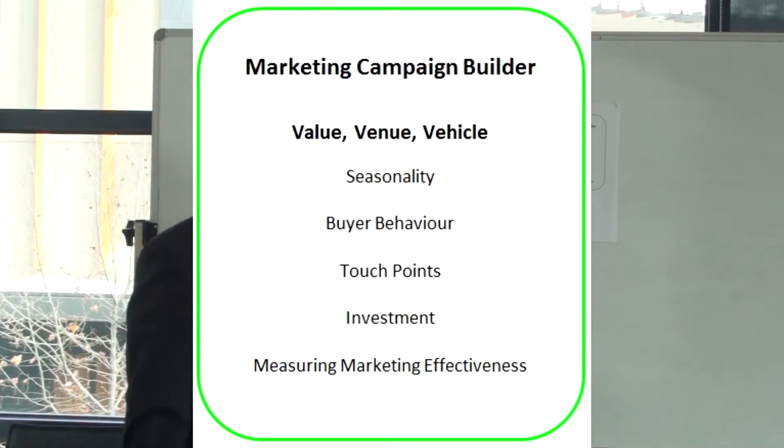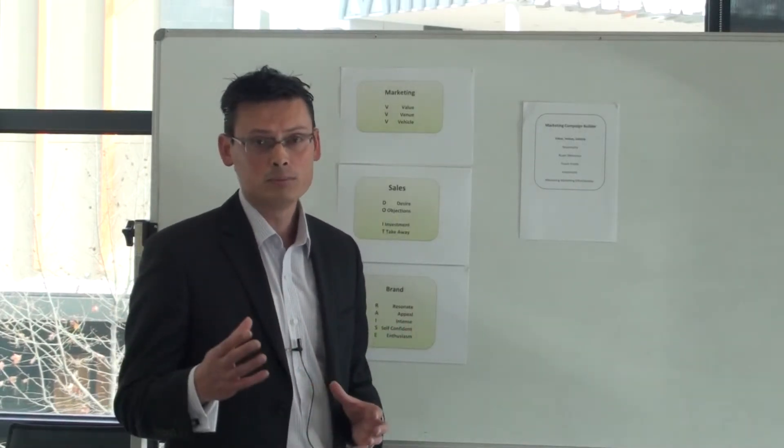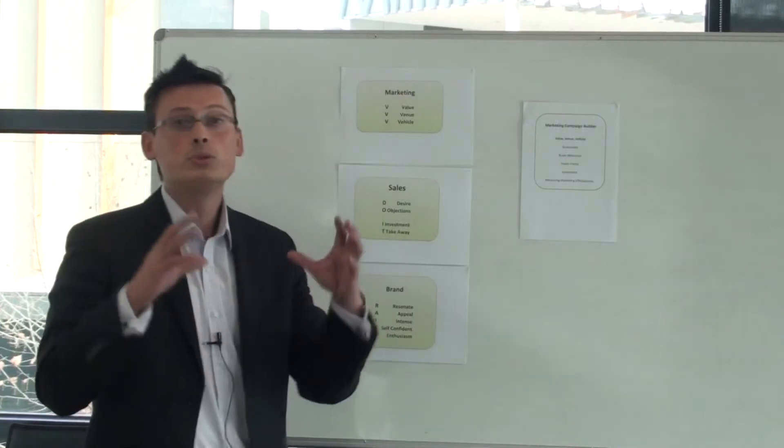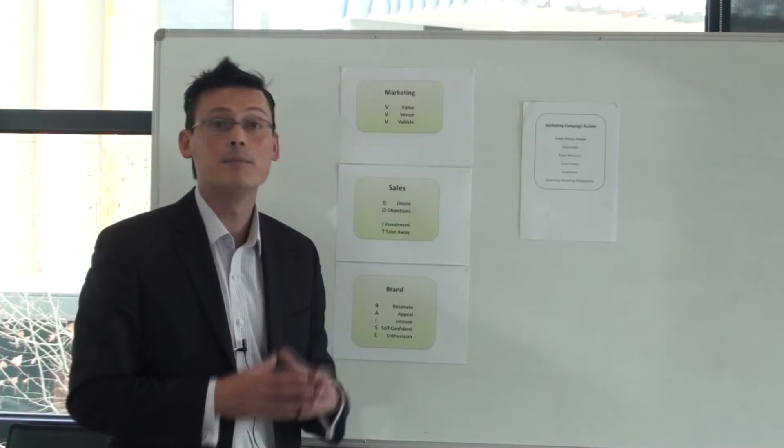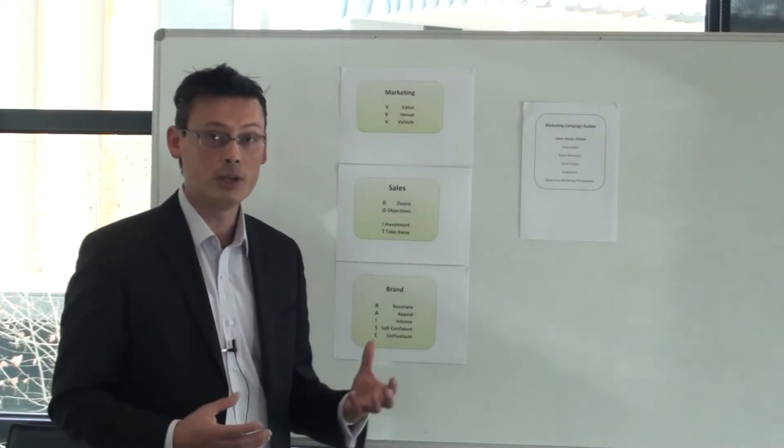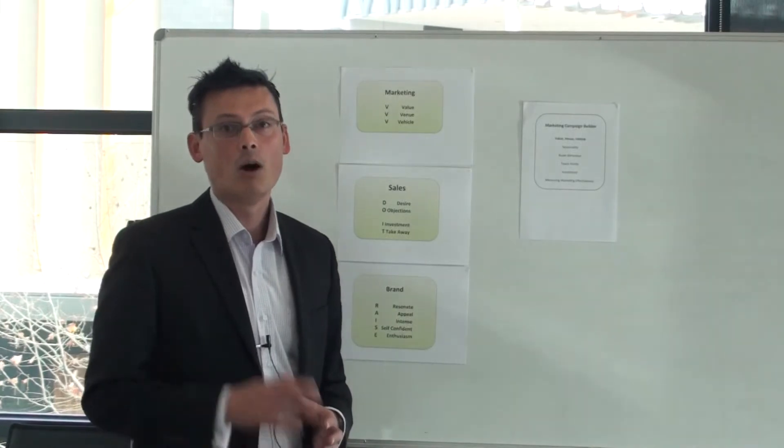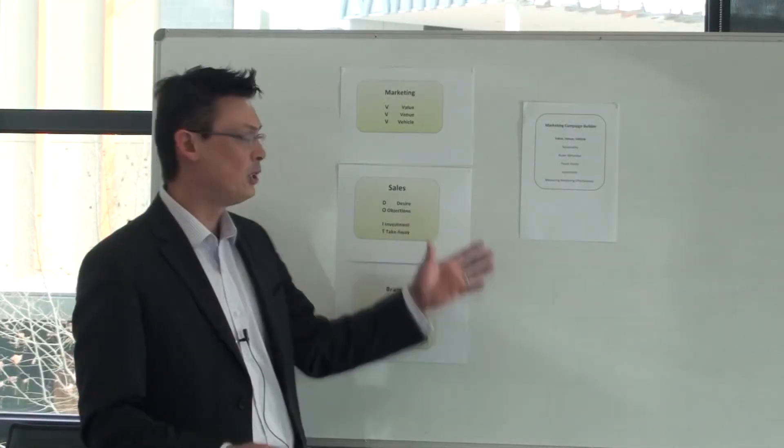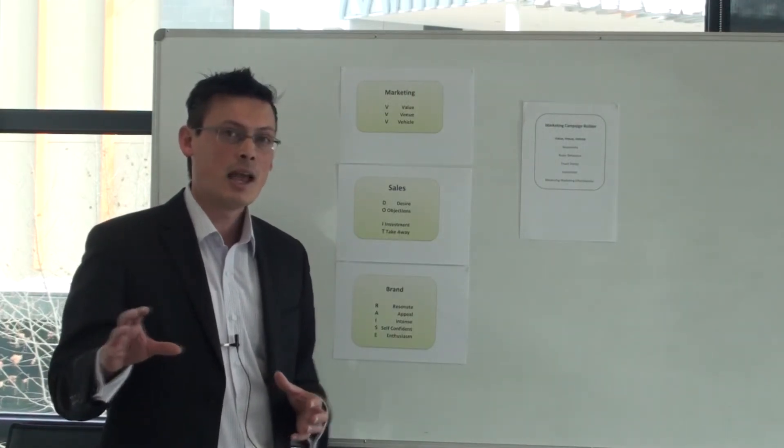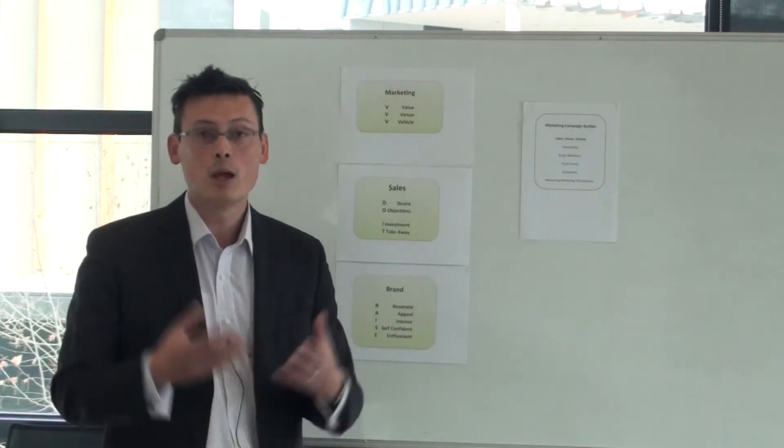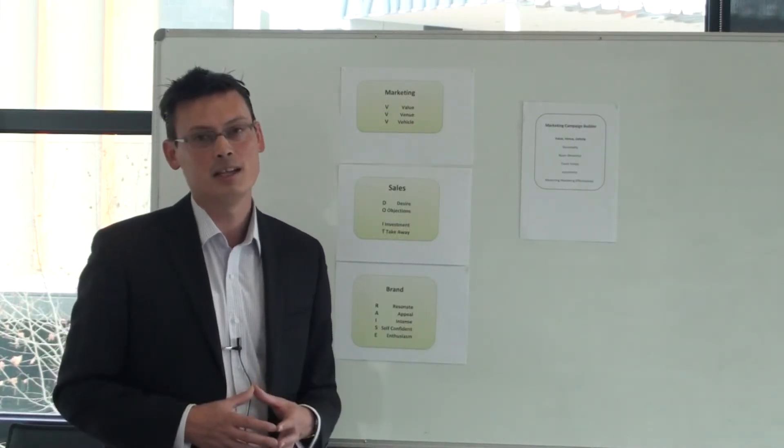And again, we focus on venue, value, vehicle. But what we'll do is I'll take you through a framework and I'll send you a PDF booklet which you can work through with the video. You need to think about your seasonality of when your customers buy, you need to think about your buyer behavior, your marketing touch points, and how does that actually flow on and cascade into your marketing budget. And then, how do you measure the effectiveness of your marketing effort?